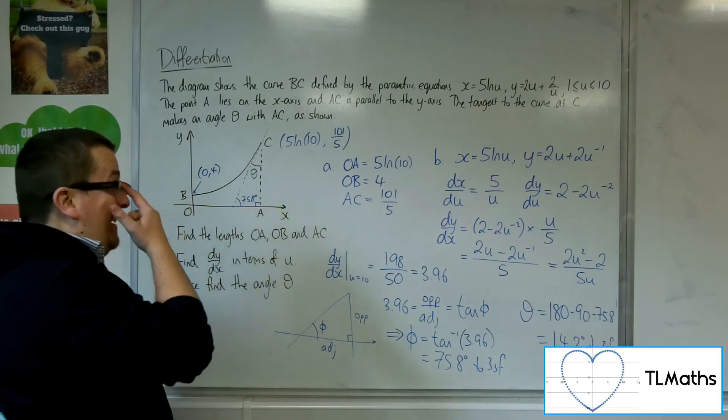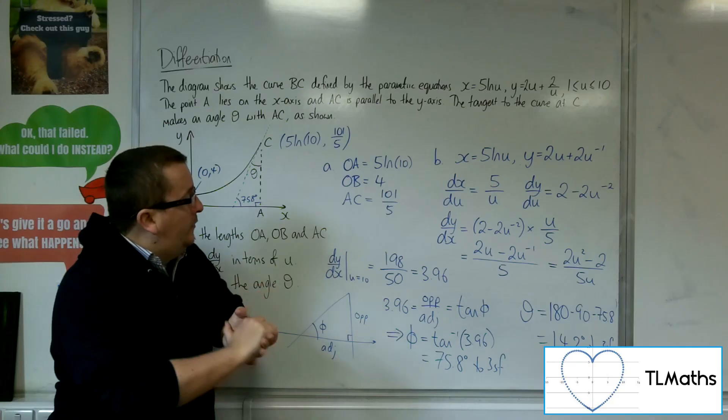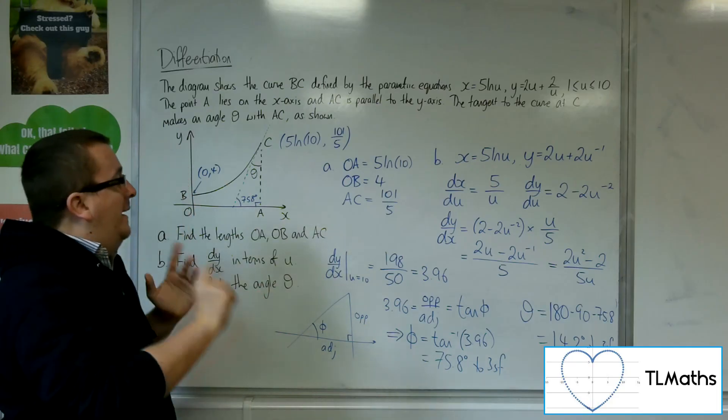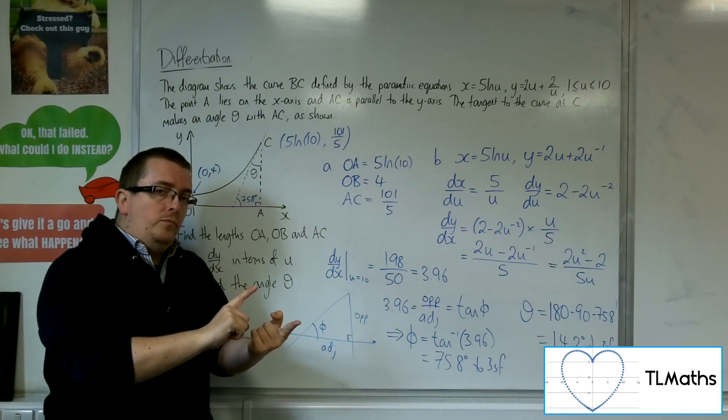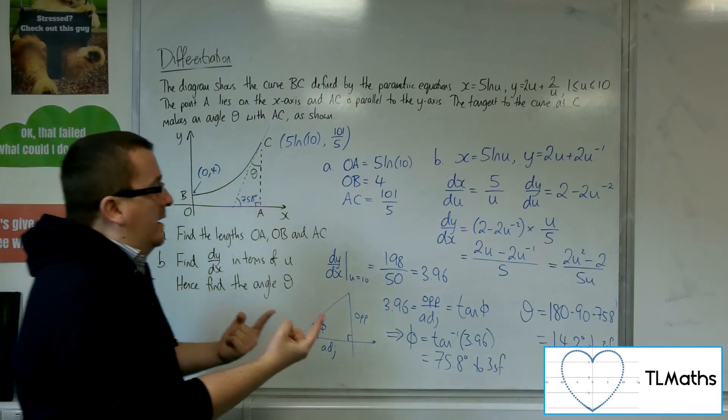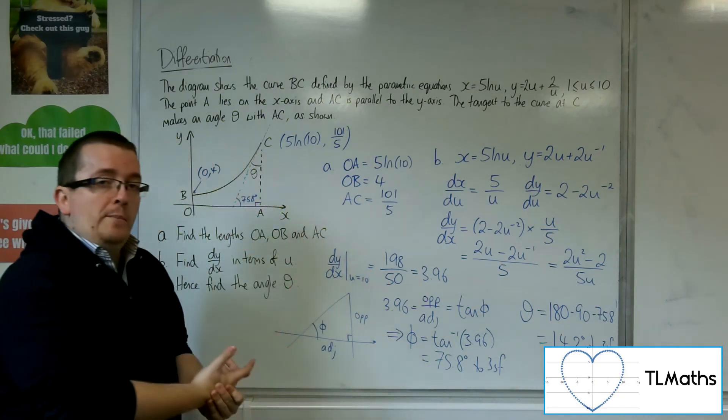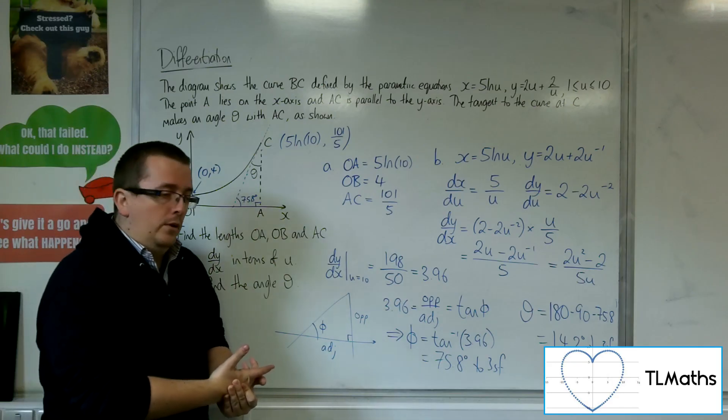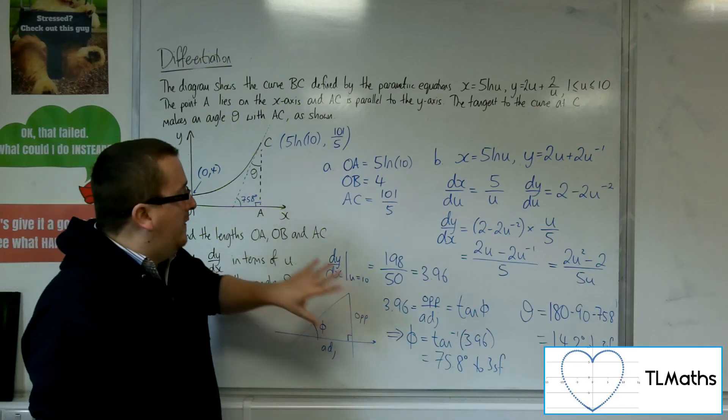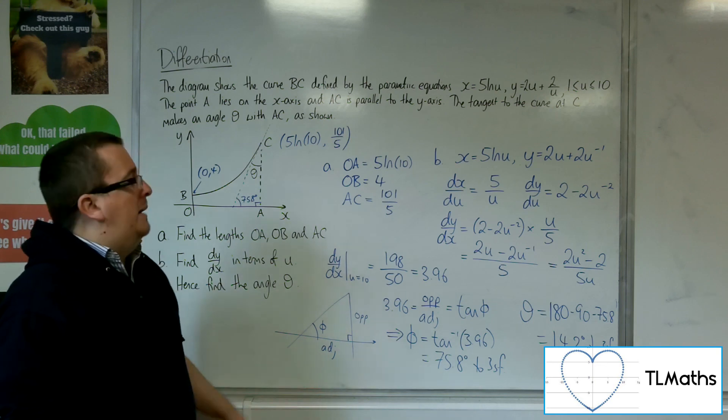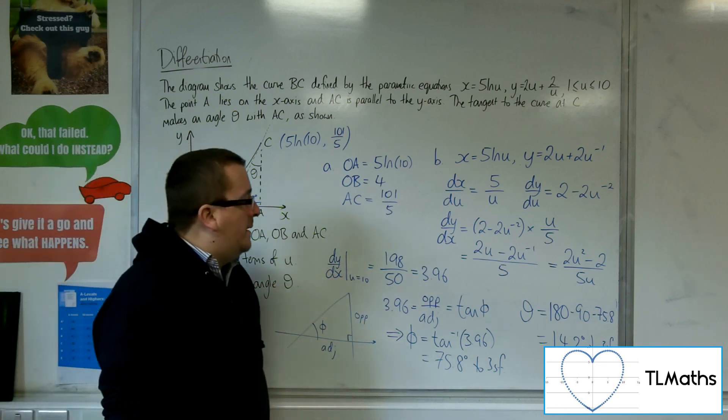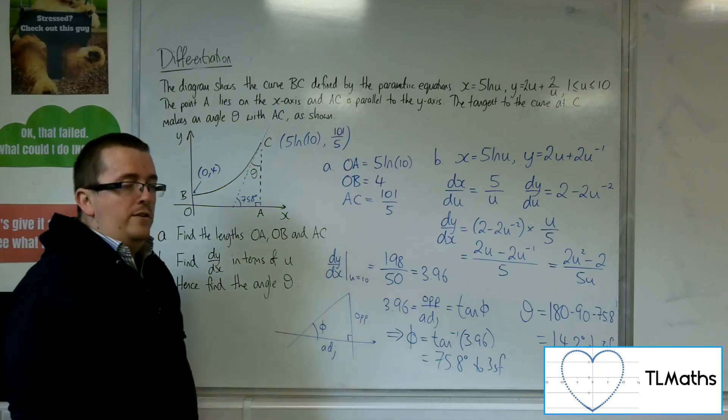So what I'm getting at here is it is very useful for you to be able to link the gradient of a tangent back to being tan of the angle as it meets the x-axis. This is a very useful thing to be able to do, and will allow you to be able to access the top-end questions.